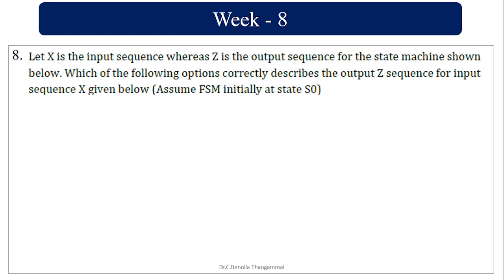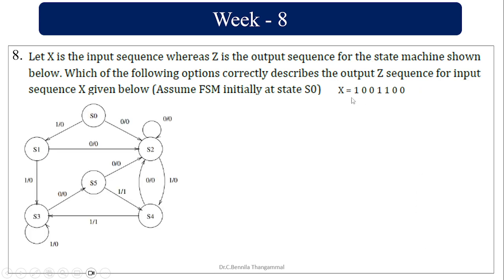They have given an FSM circuit where X is the input. The input sequence is 1, 0, 0, 1, 1, 0, 0. They ask you to start at state S0. In state transitions, the notation is input/output. With input 1 at S0, it goes to S1 with output 0.